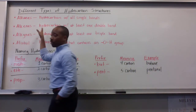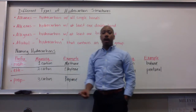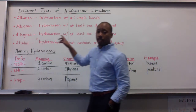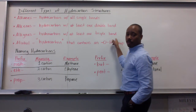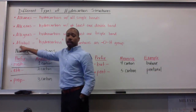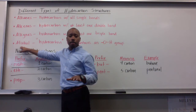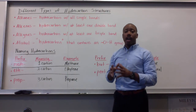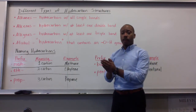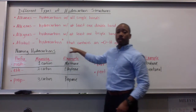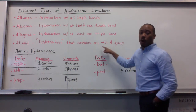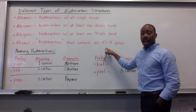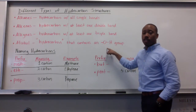Alkenes are hydrocarbons that have at least one double bond. The next type, alkynes, are hydrocarbons with at least one triple bond. The last type we'll talk about is alcohol, which is the exception to the hydrocarbon rule. These are in air quotes because by definition they're not technically hydrocarbons consisting of only hydrogens and carbons. An alcohol is a hydrocarbon that contains an OH group, called the alcohol group. If you remember back to our PVA lesson, polyvinyl alcohol had this group attached to its structure — that's what made it an alcohol.